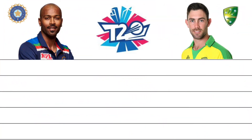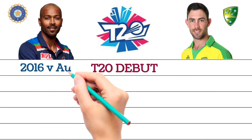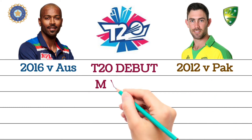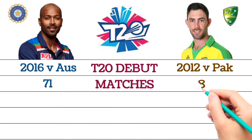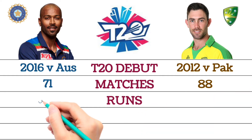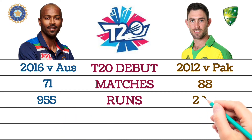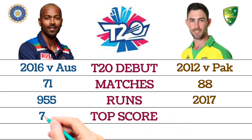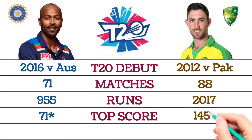T20 Career. T20 debut: Hardik Pandya debuted in 2016 against Australia; Glenn Maxwell debuted in 2012 against Pakistan. Total matches: Hardik Pandya played 71 matches; Glenn Maxwell played 88 matches. Total runs: Hardik Pandya scored 955 runs; Glenn Maxwell scored 2017 runs. Top score: Hardik Pandya, 71 not out; Glenn Maxwell, 145 not out.